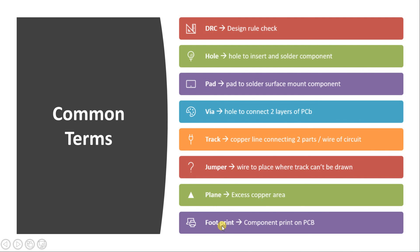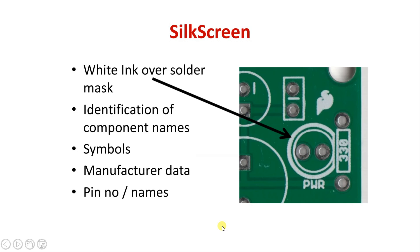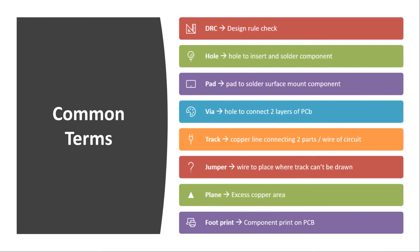Lastly, there is one more important term: footprint. Footprint is the PCB footprint of a particular component — every component has its own footprint, and the dimensions of the footprint must be accurate if you plan to create PCBs and solder components onto them. Before designing, you must know the footprint of the particular components you are using. These are some of the most common terms which are helpful when creating or studying printed circuit boards.